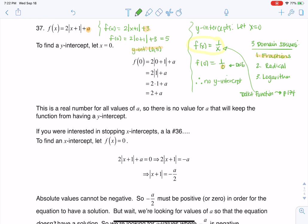All right now let's get to 37. So what I'm going to do is go ahead and try and find this y-intercept. I'm going to let x equal 0. So you see me substituting in 0 for x and I work through the algebra here and I arrive at this expression. Now if we take a look at this expression 2 plus a it's not a fraction. It is not a radical and it is not a logarithm.